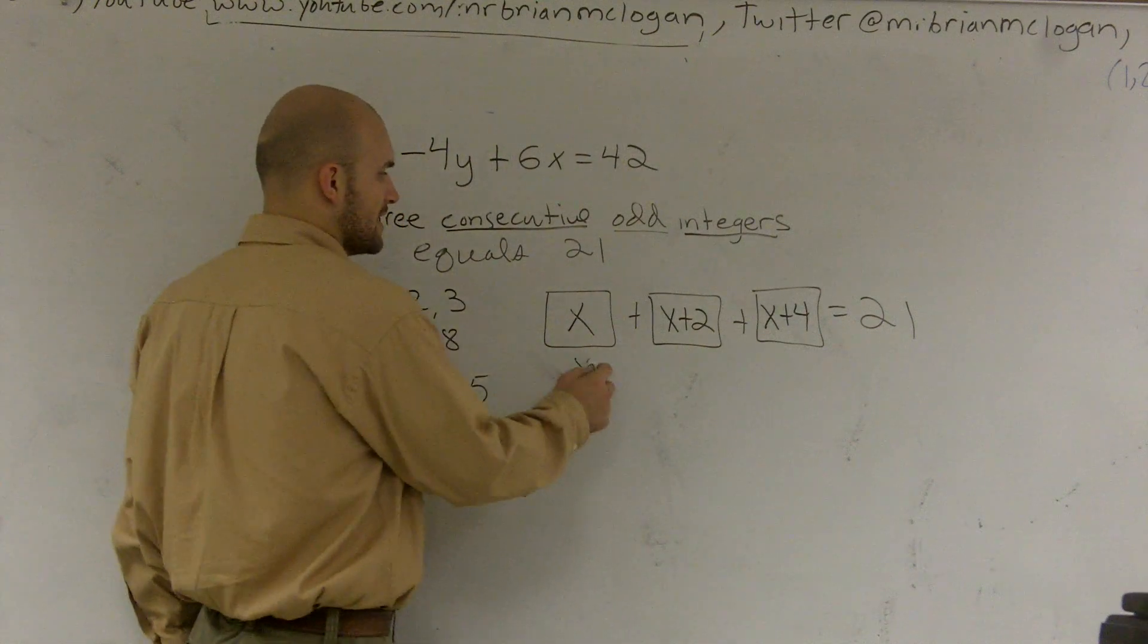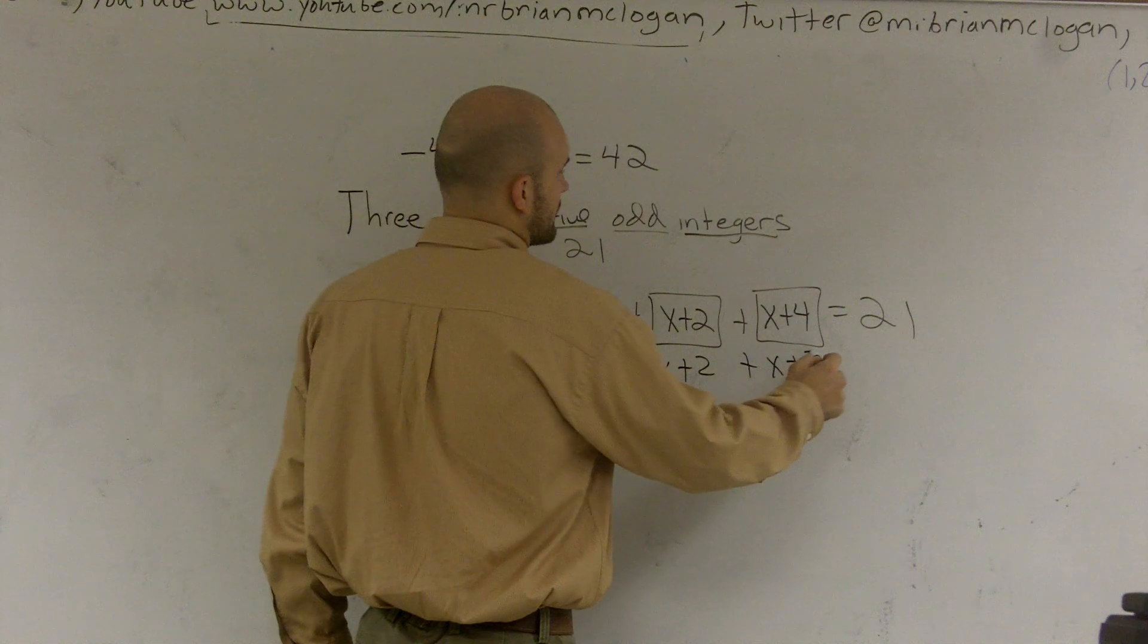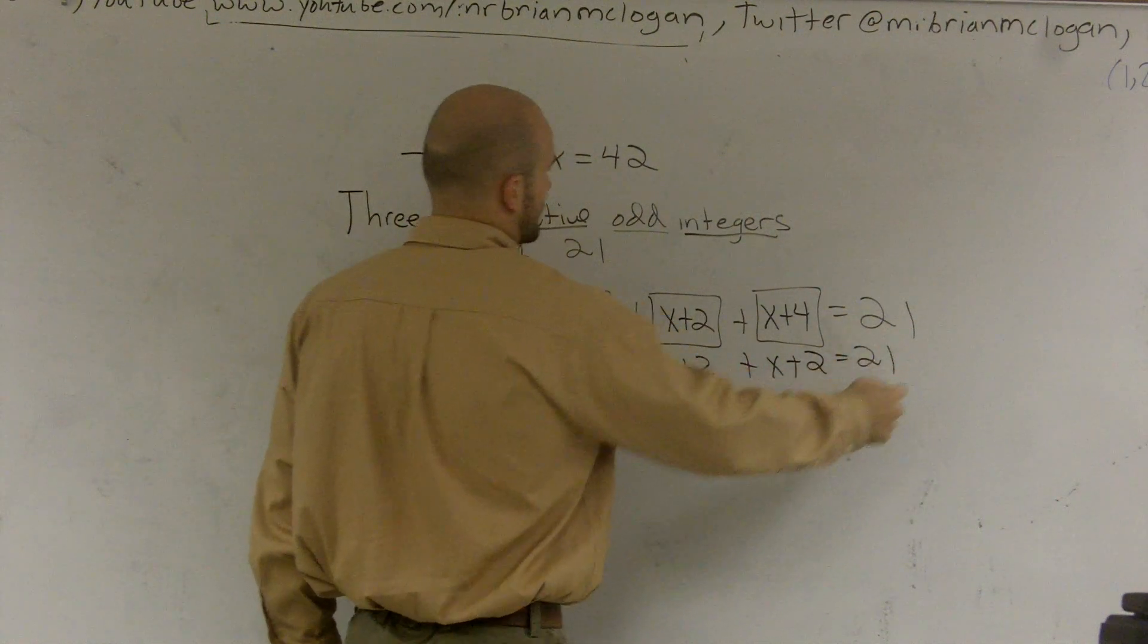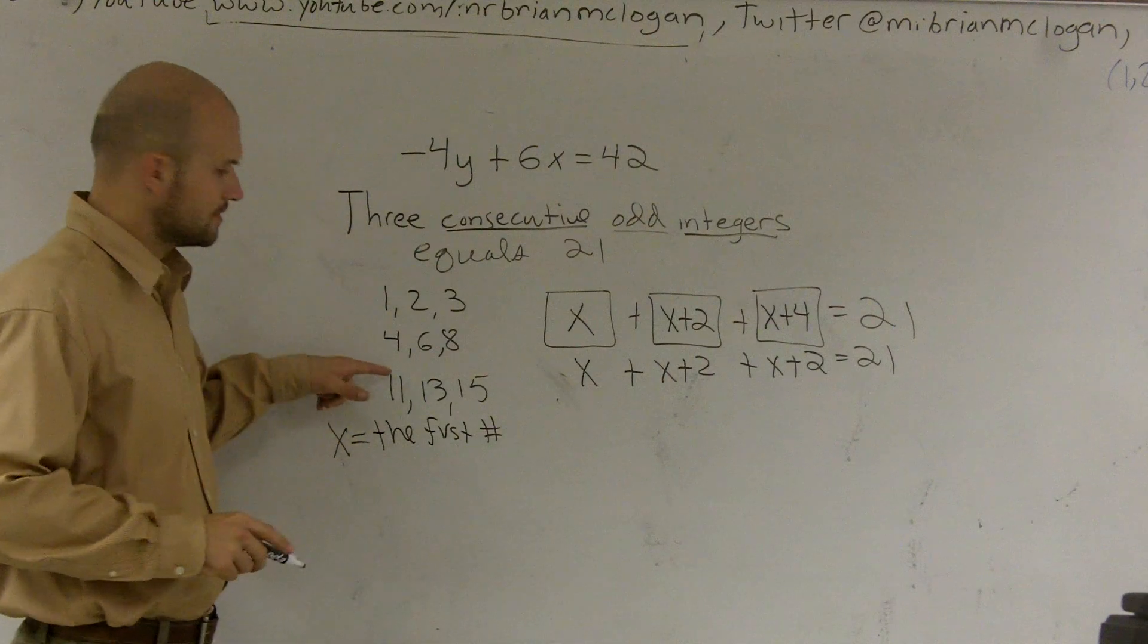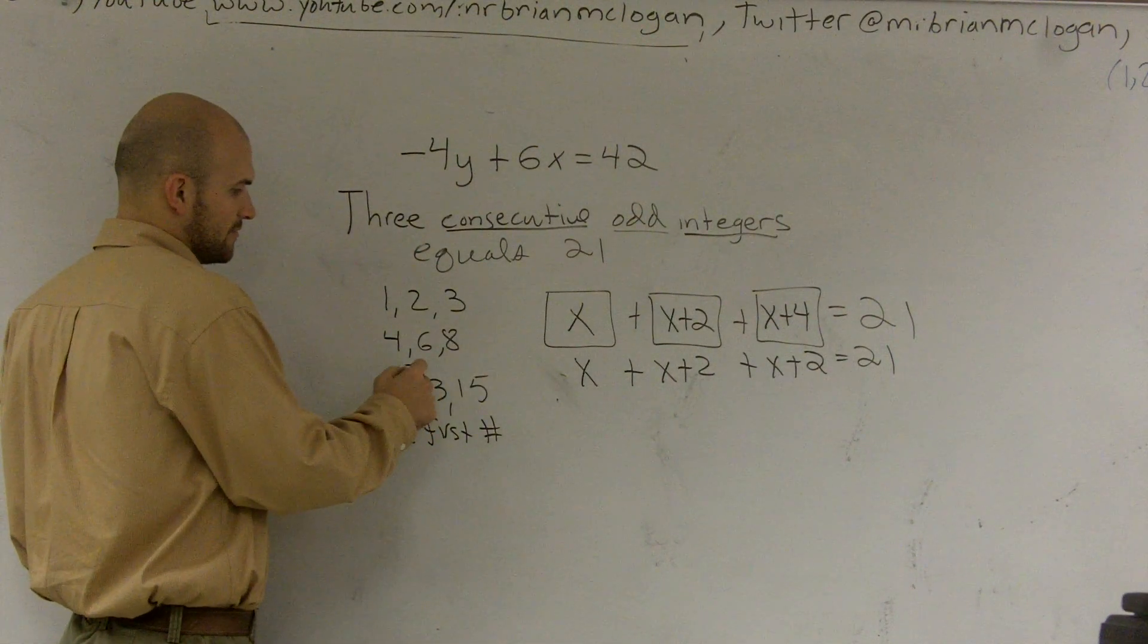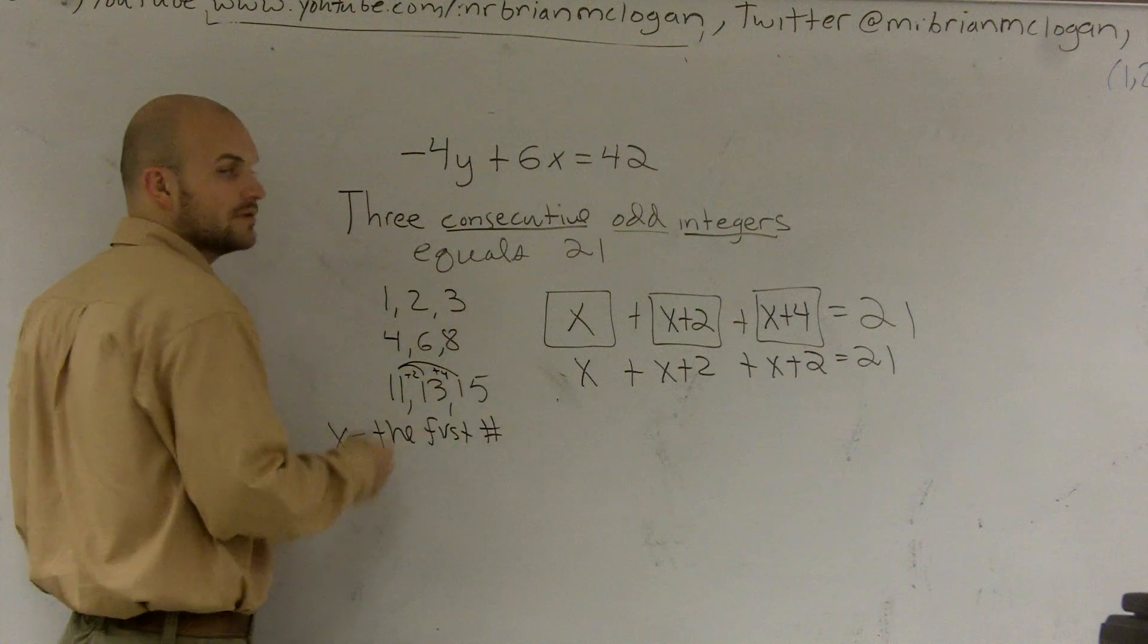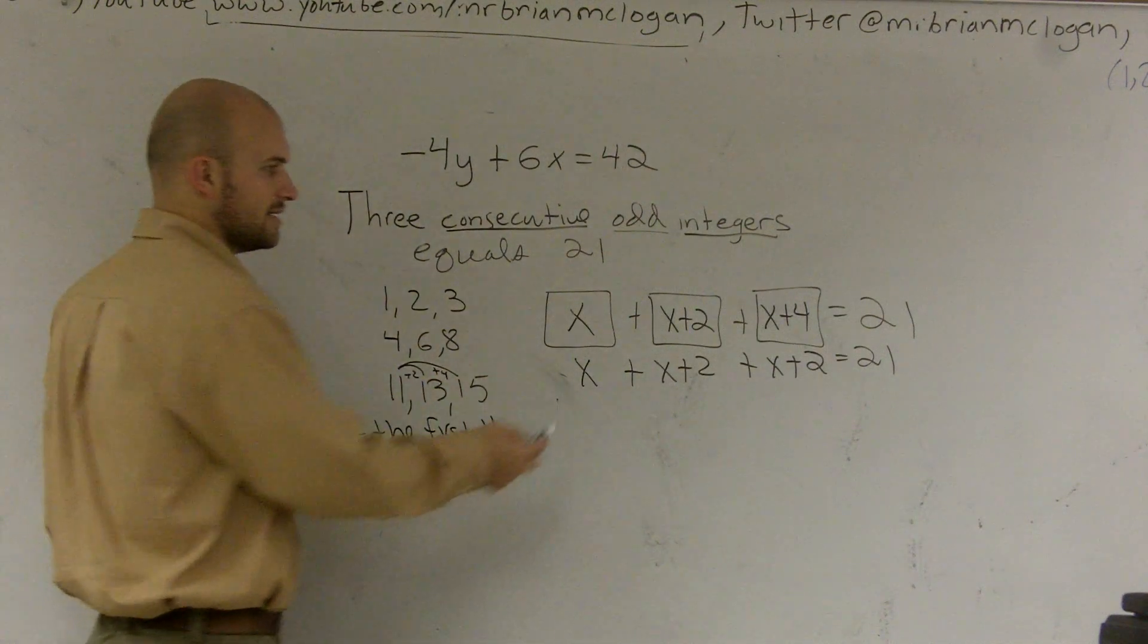Once you're doing it from X plus two. Put it to you this way. From here to here is plus two. From here to here is plus four. Because four is like... And 11 is like X. Right. Exactly.